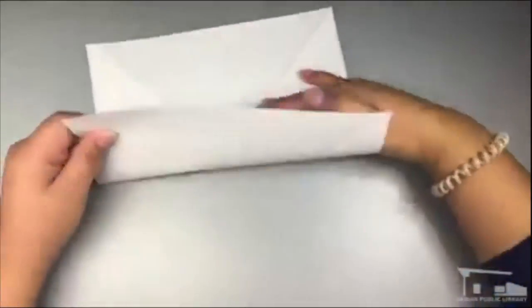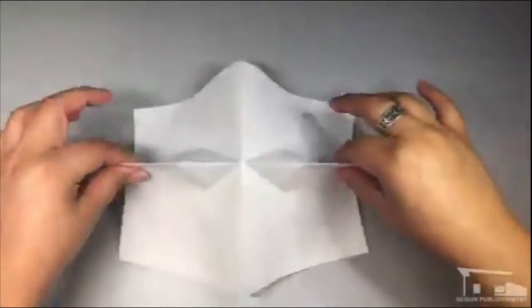Flip it over so that the creases make it sit up like a pyramid. Fold it in half edge to edge, then open it up and fold the other edges together and open it up. Now flip it over and set it square in front of you.